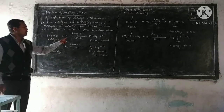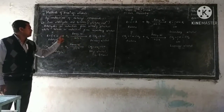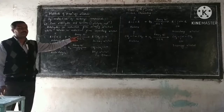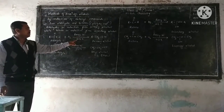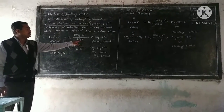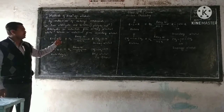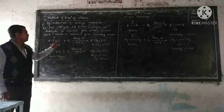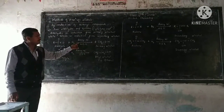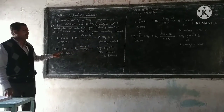Aldehyde on reduction gives primary alcohol in the presence of Raney Nickel at a temperature of about 413 Kelvin. Here, addition of hydrogen is the reduction. So aldehyde on reduction in the presence of Raney Nickel gives primary alcohol.